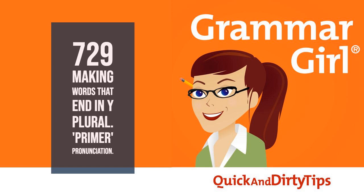For example, most plurals are formed by simply adding S or ES to the end of a word. If a noun ends with a sound that merges gracefully with the S sound, you add an S—dog becomes dogs and cat becomes cats. If a noun ends with a sound that doesn't slide smoothly into an S sound, you add ES. This happens a lot with words that end in sibilant sounds, like SH, CH, X, Z, and S. For example, church becomes churches, buzz becomes buzzes, and box becomes boxes, all with an ES on the end.